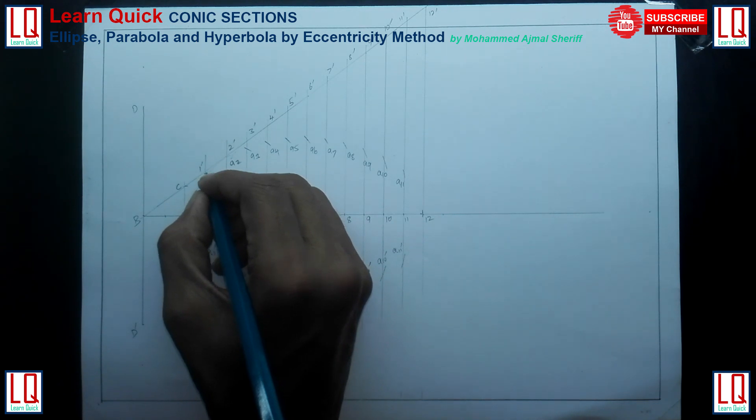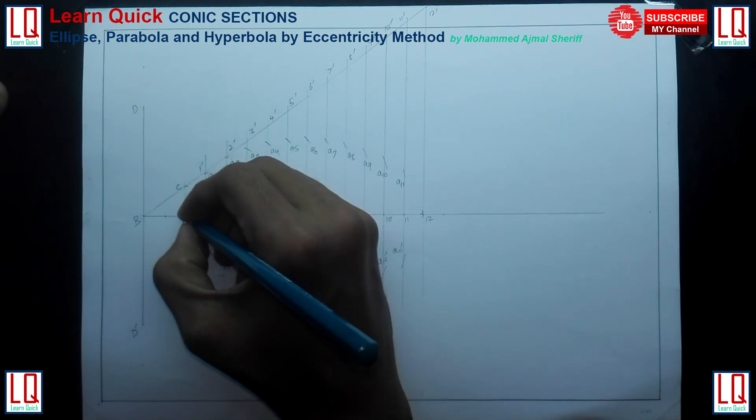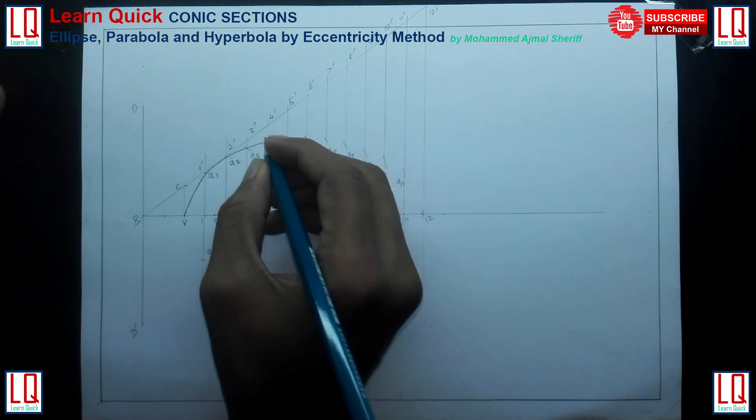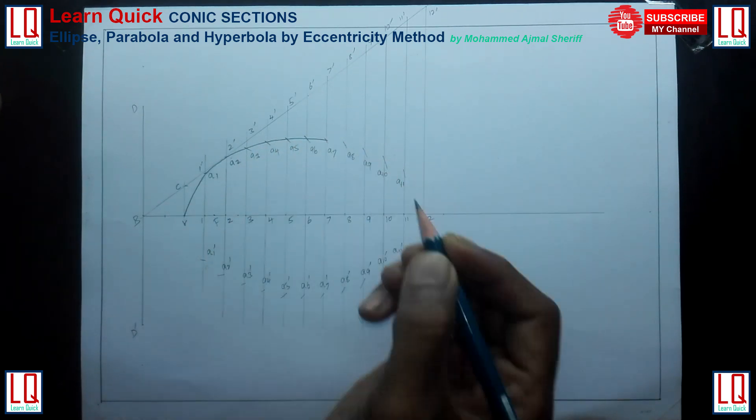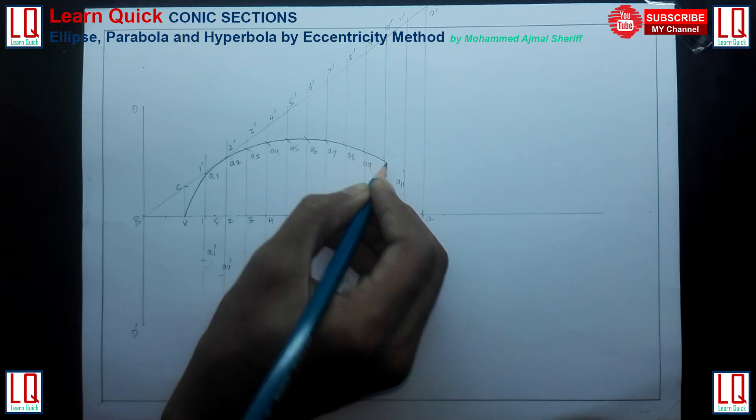Draw a smooth curve joining vertex with A1, A2, A3, and so on above the axis, and joining vertex with A1 dash, A2 dash, A3 dash, and so on below the axis. You can use French curves to obtain a smooth ellipse curve.